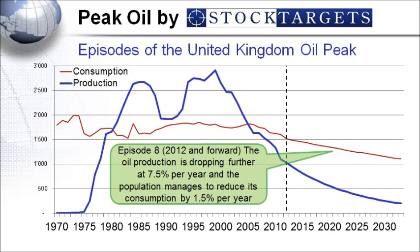Episode number eight, which is now the future: oil production continues dropping at 7.5% per year, while the population manages to reduce its consumption by only 1.5% per year. That 1.5% decrease in consumption is what has been measured over the last 6-7 years — oil being expensive, people cut down in its consumption. I've never seen any economy able to reduce its consumption on a longer-term basis by more than 1.5% to 2%. The blue line indicates the 7.5% production decrease, which will widen the gap with the consumption red line.